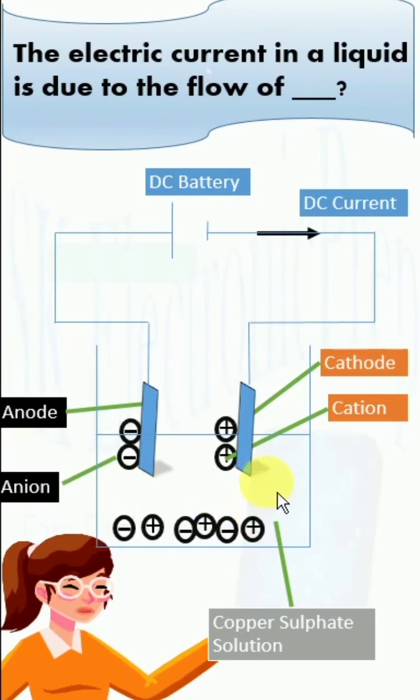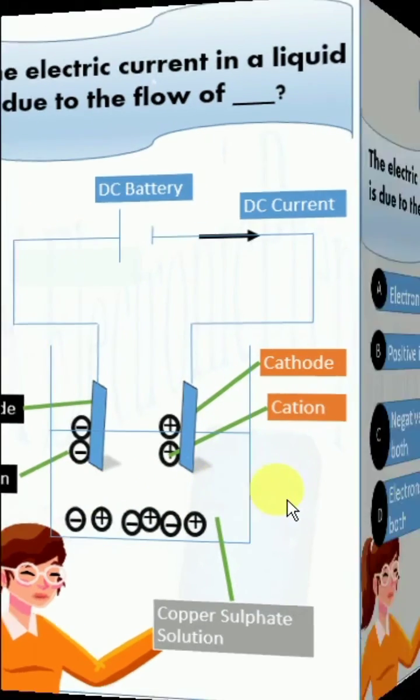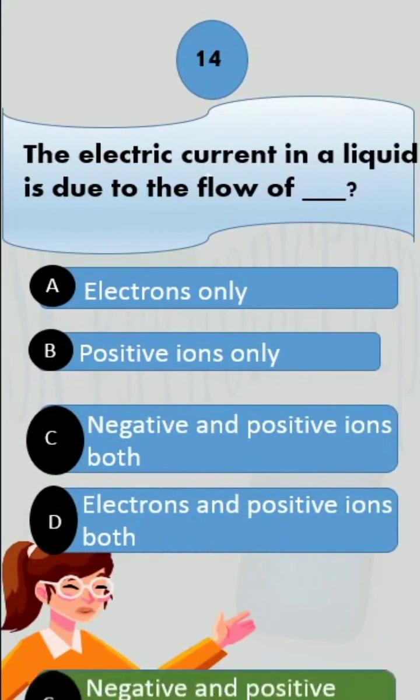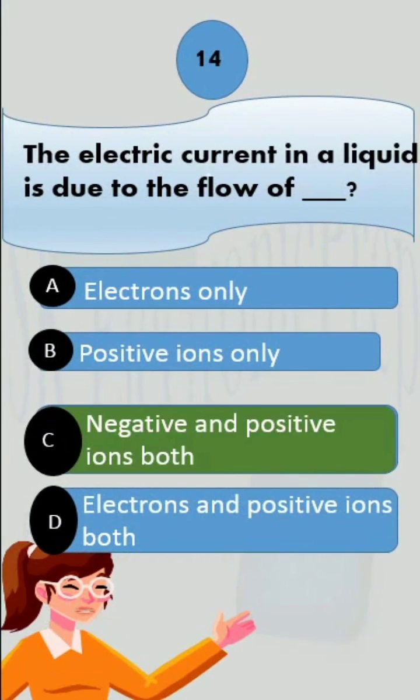Hence, we can say electric current in a liquid is due to the flow of both negative and positive ions.